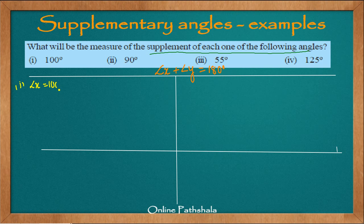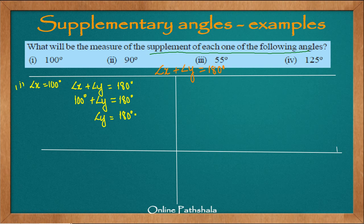Starting with the first one, angle X is 100 degrees. We apply angle X plus angle Y equals 180 degrees. Substituting 100 degrees for X, we get 100 plus angle Y equals 180 degrees. Transposing 100 degrees to the other side, angle Y equals 180 minus 100, which gives us angle Y equal to 80 degrees. Therefore, 80 degrees is the supplement of 100 degrees.